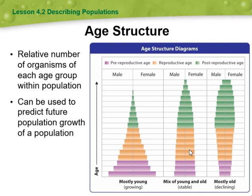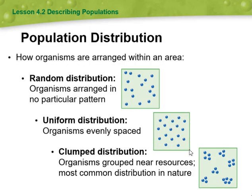Before we go to the age structure, population distribution technically refers to how populations are spread out across a given area. It can vary greatly, with some areas having high population density and others having low population density. Factors such as geography, climate, resources, and human activities influence population distribution.